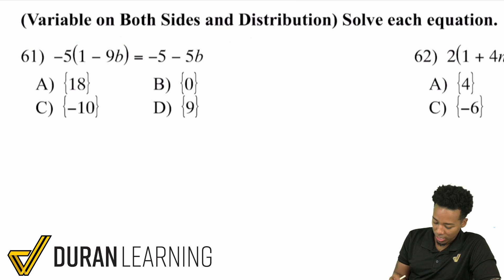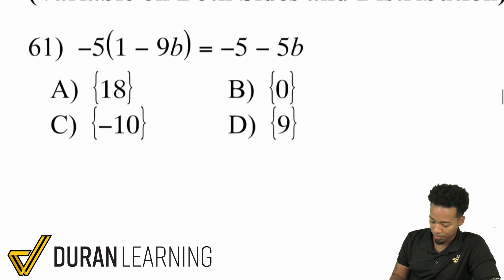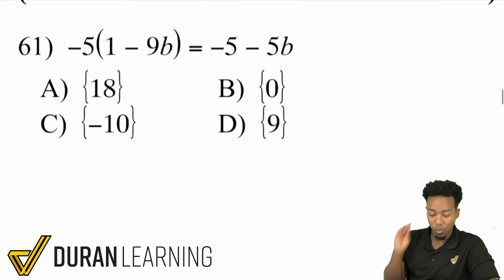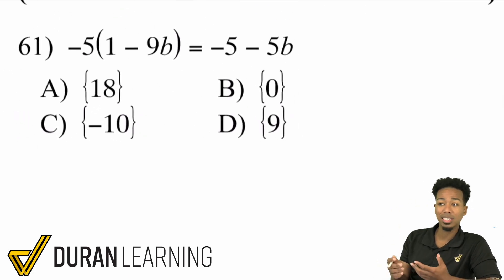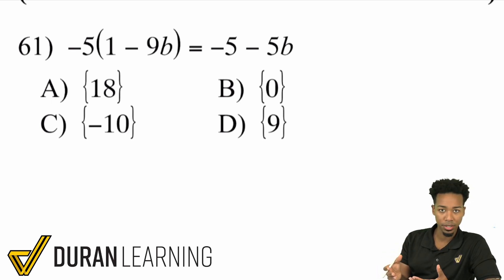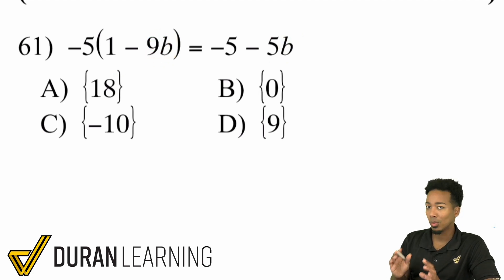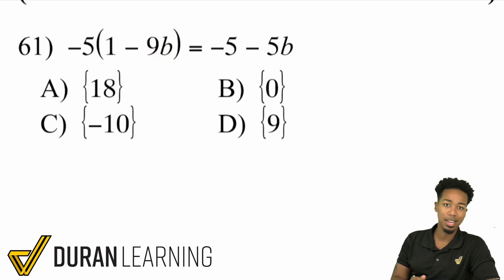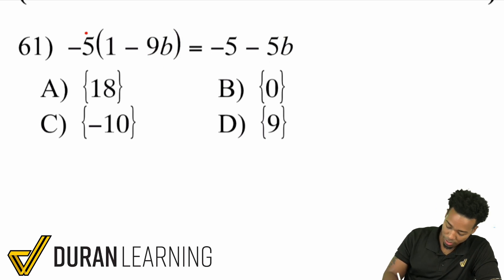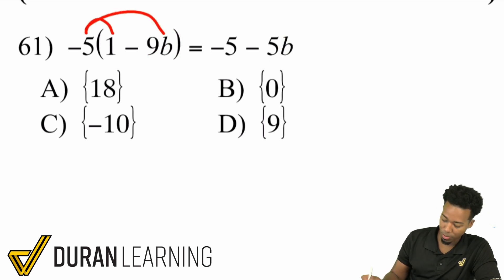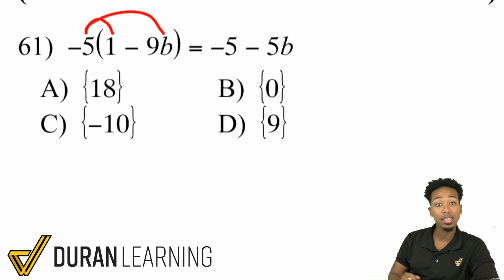Let's check out problem 61. Stay calm, cool, and collected. We see a parentheses and we notice variables on both sides. Take it one step at a time. The first thing I'll do is distribute the negative 5 to break that parentheses open.